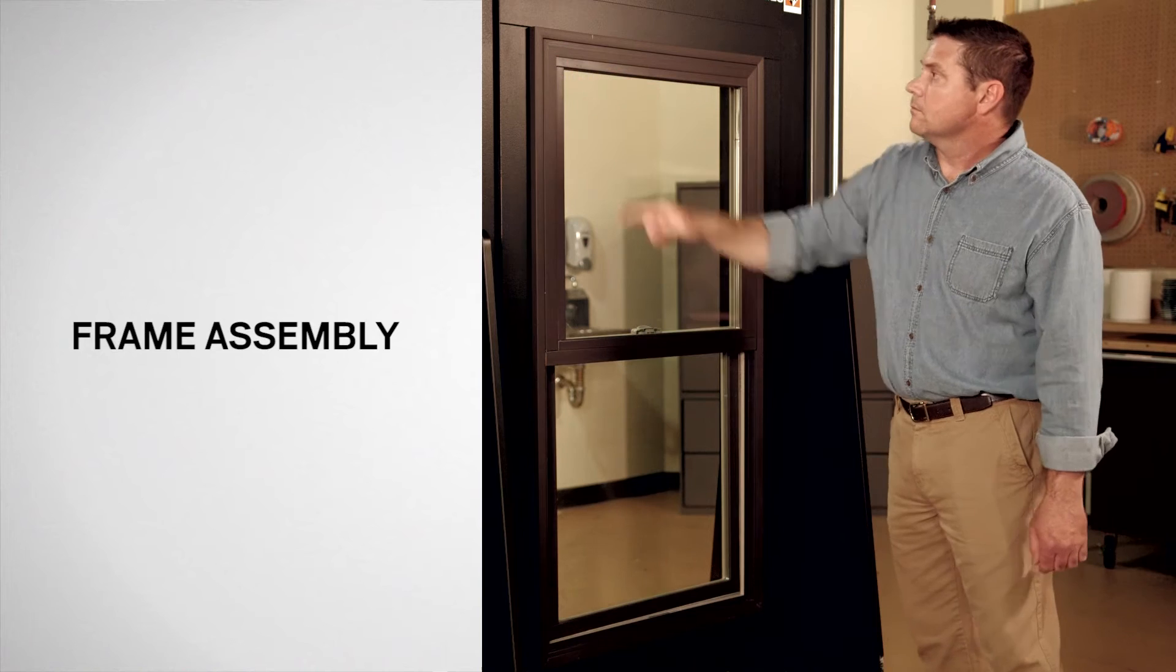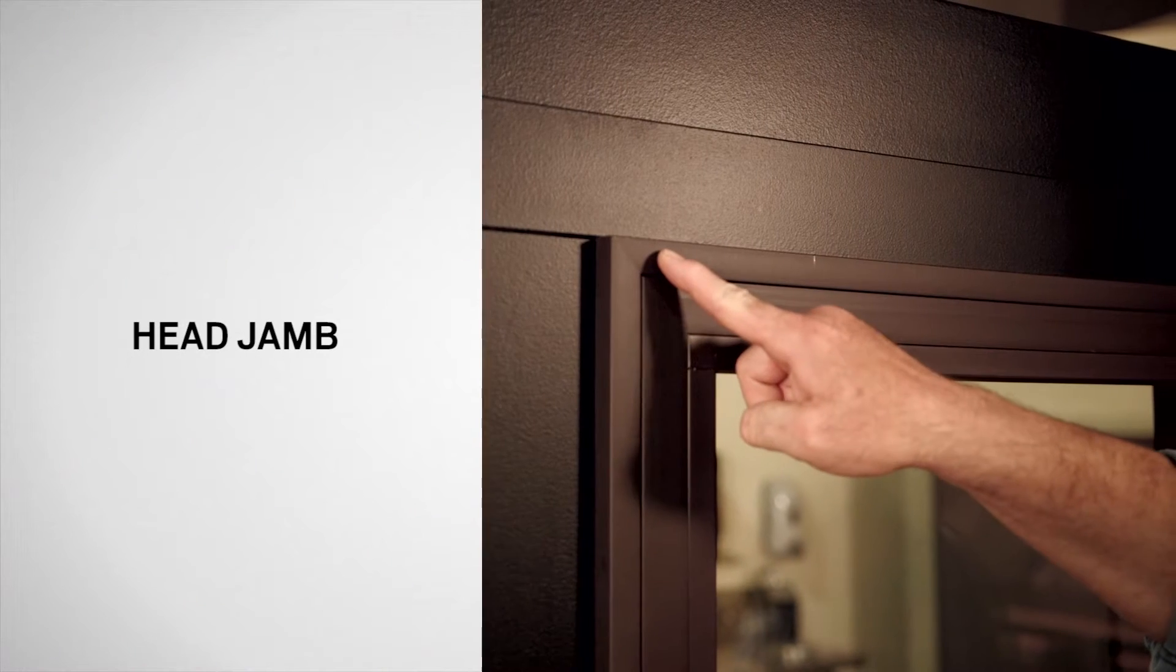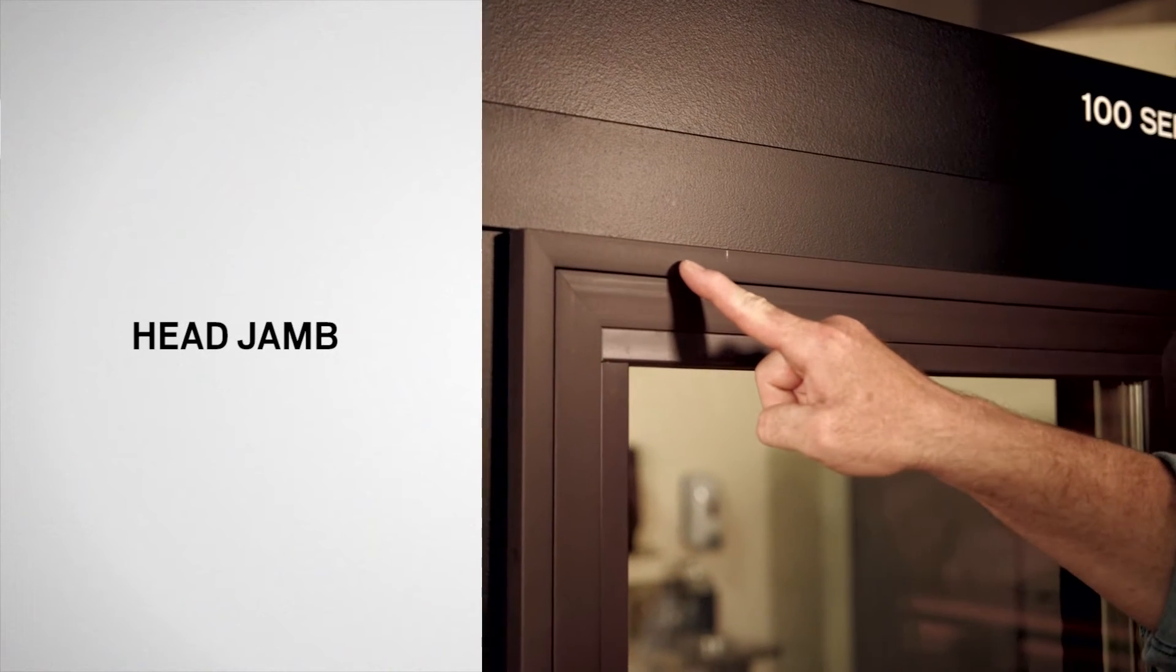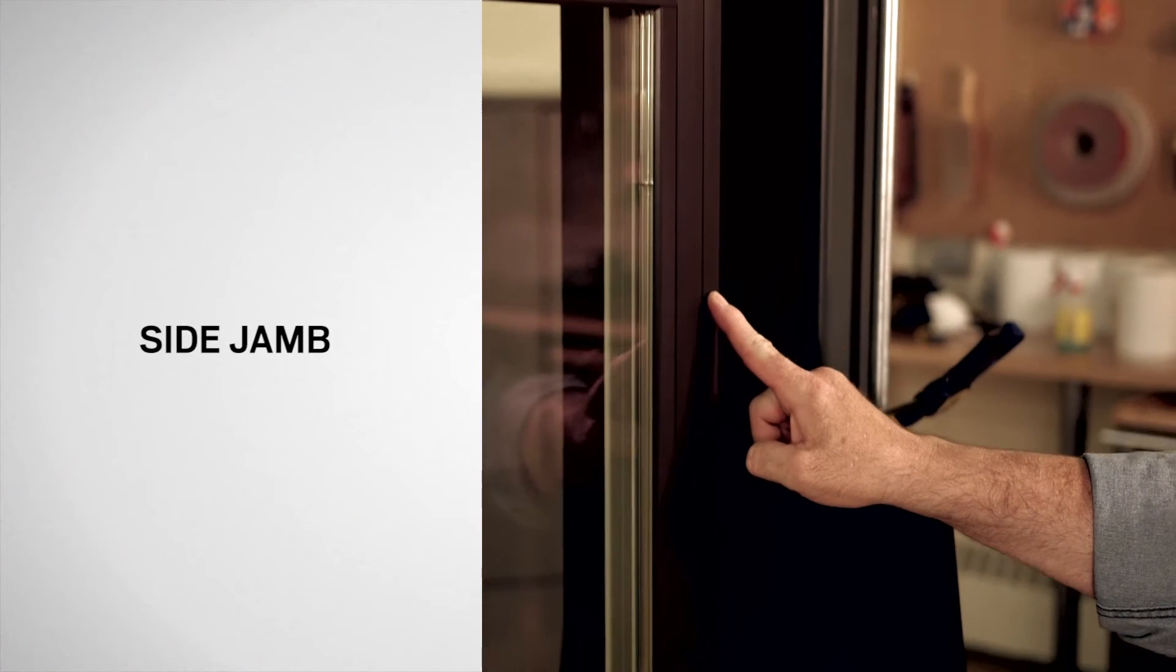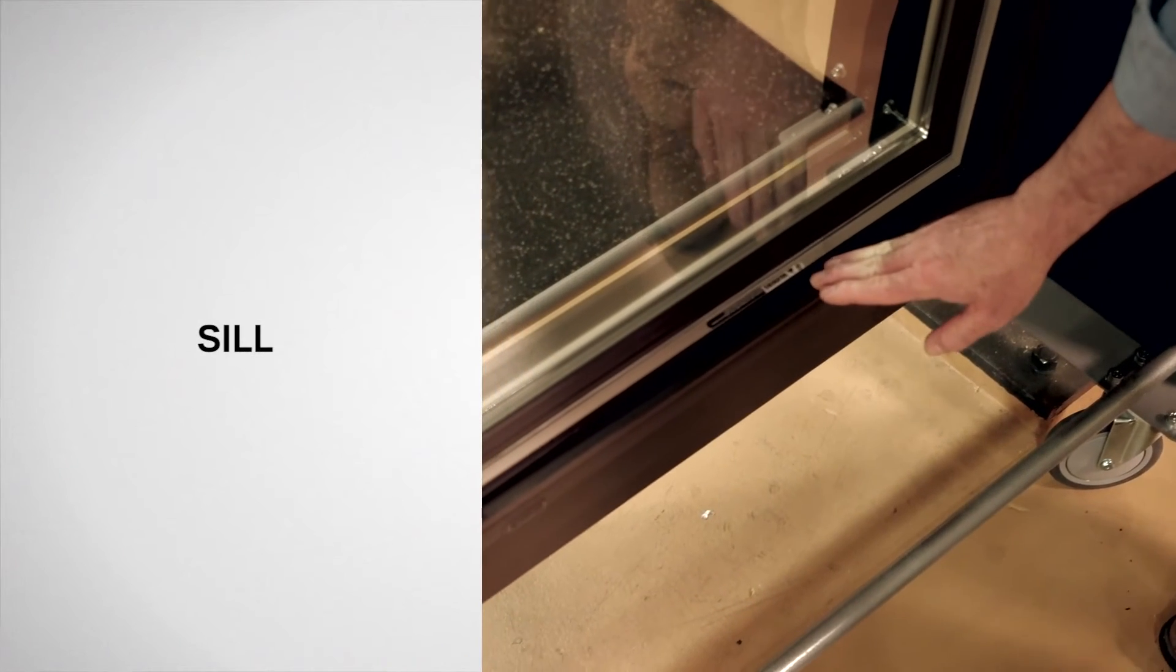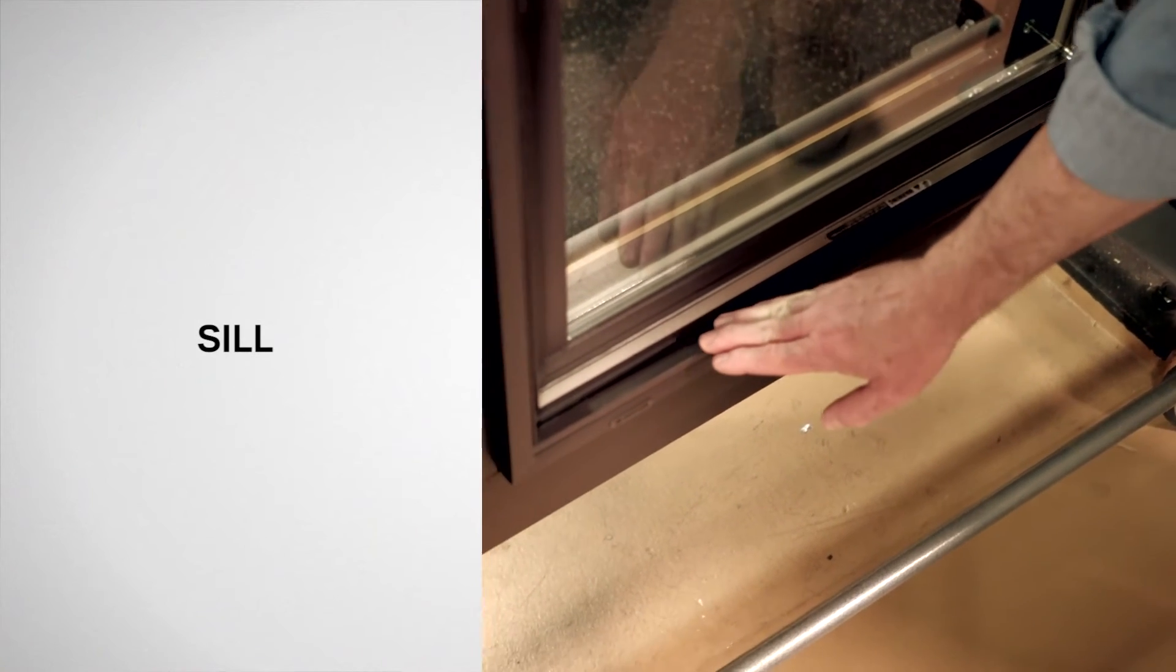The frame holds the sash in position. Here is the head jamb, a side jamb, and the sill, which is the horizontal member that forms the bottom of the window.